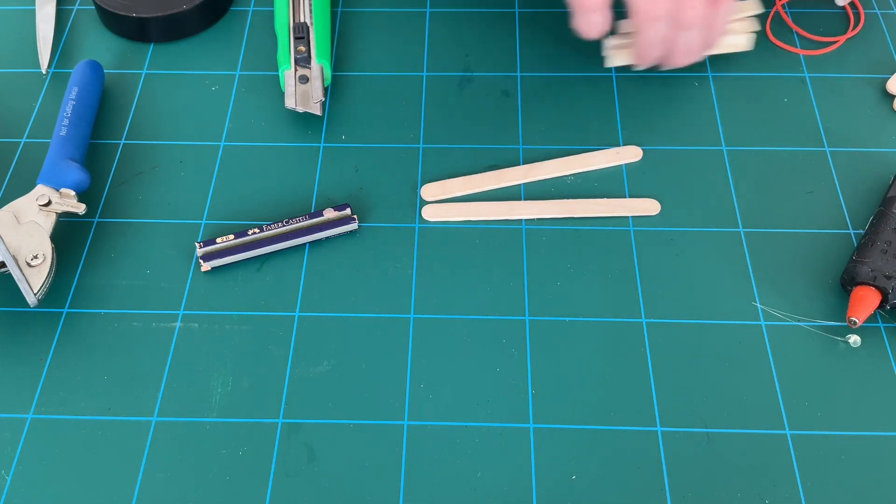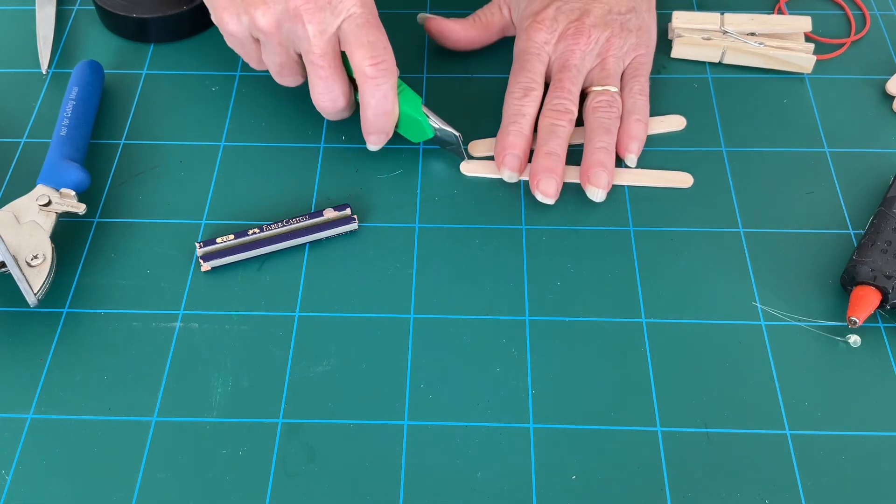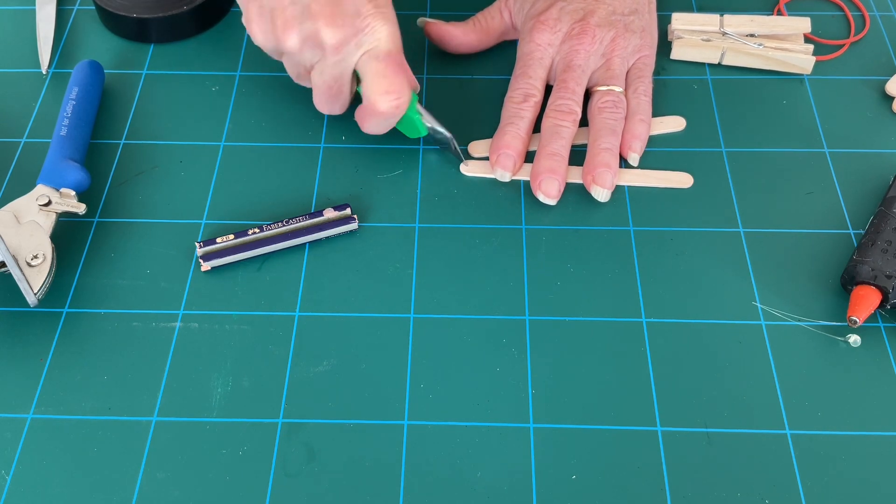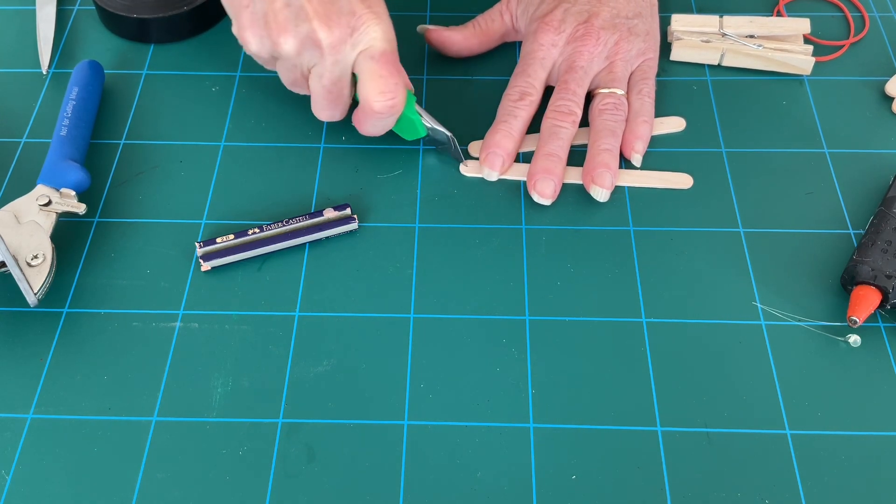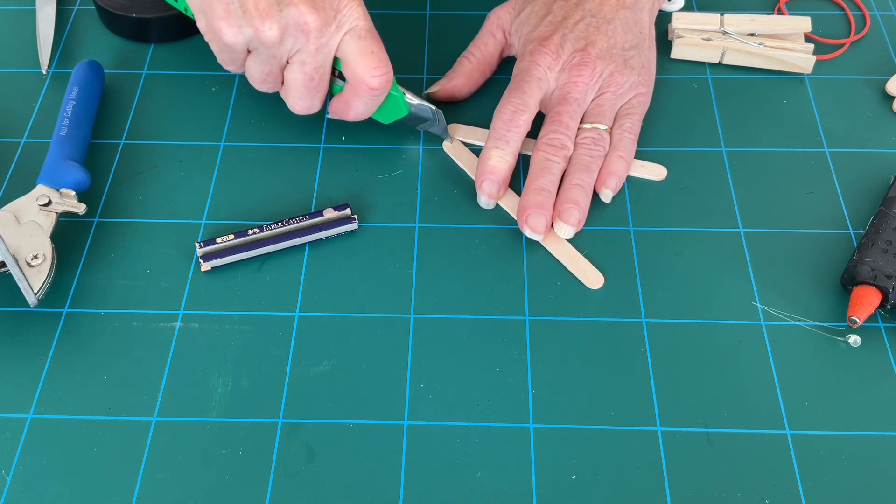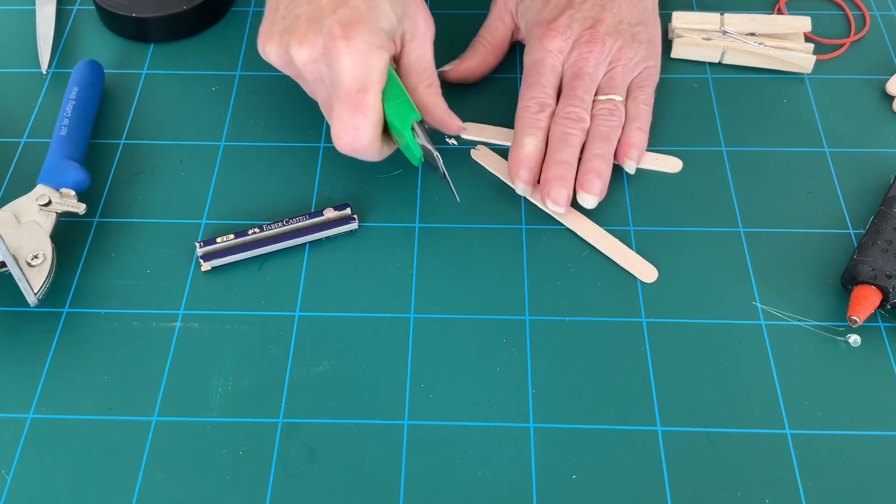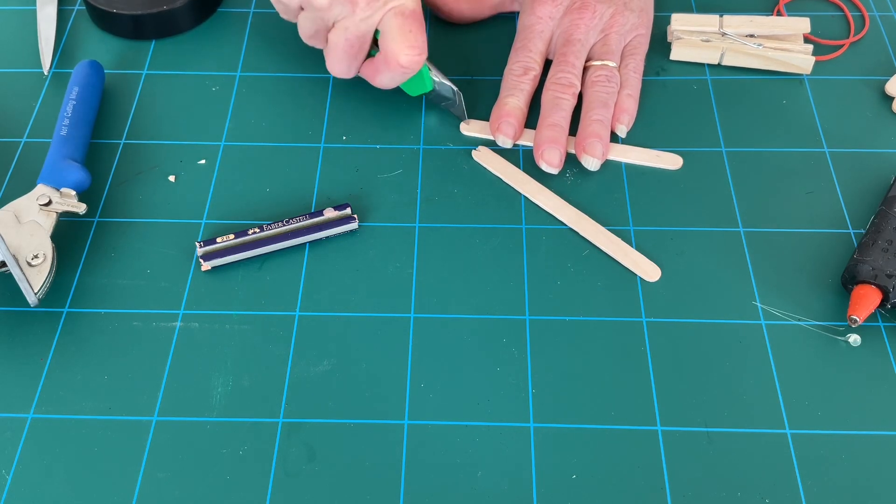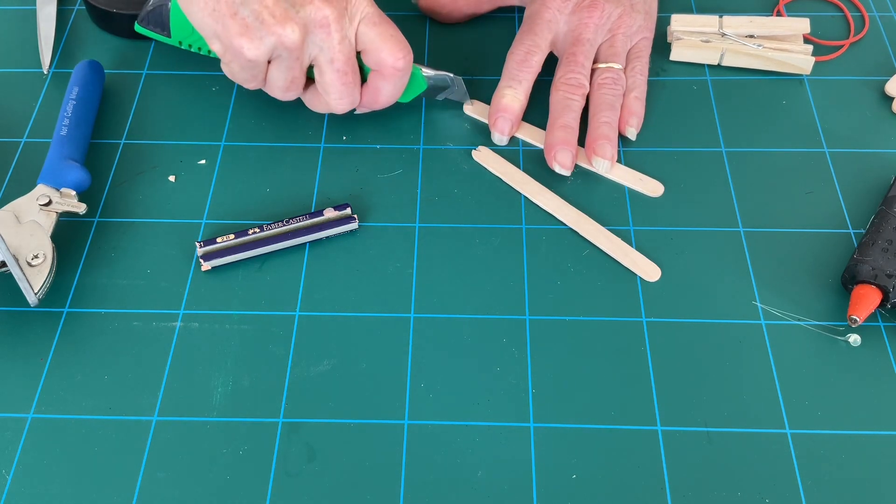First, we're going to cut a couple of notches in our craft sticks. Just a little triangular notch in the end of two of the craft sticks. Please get an adult to help you do this because it's actually quite difficult.